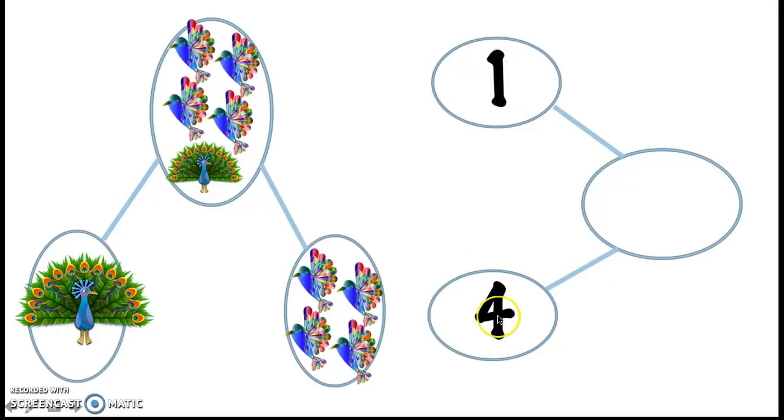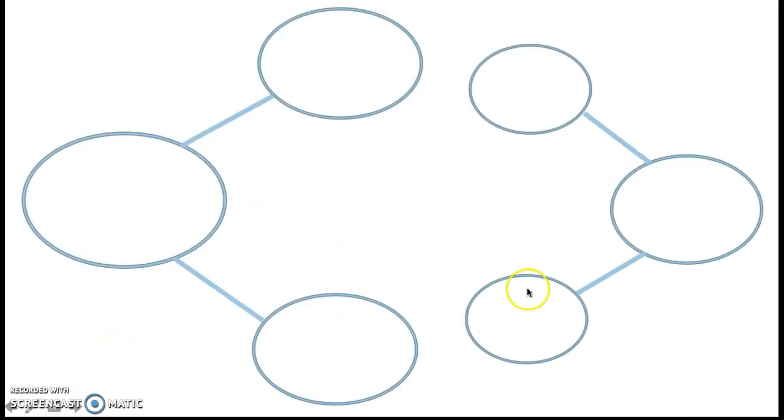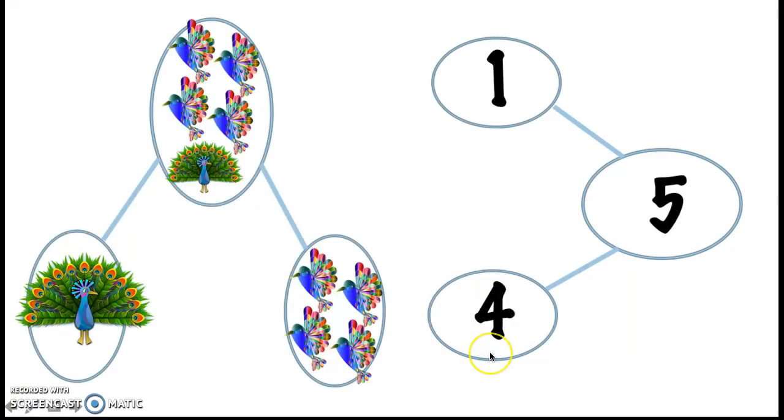All right, so if one is one of the parts and four is the other part, how many do we have all together? Good job. Yeah, we have five. Awesome. You can count on if you want. Whoopsie. I went too fast. You could say the bigger number, four, and then count on one more to be five. Four, five to get to that whole amount.